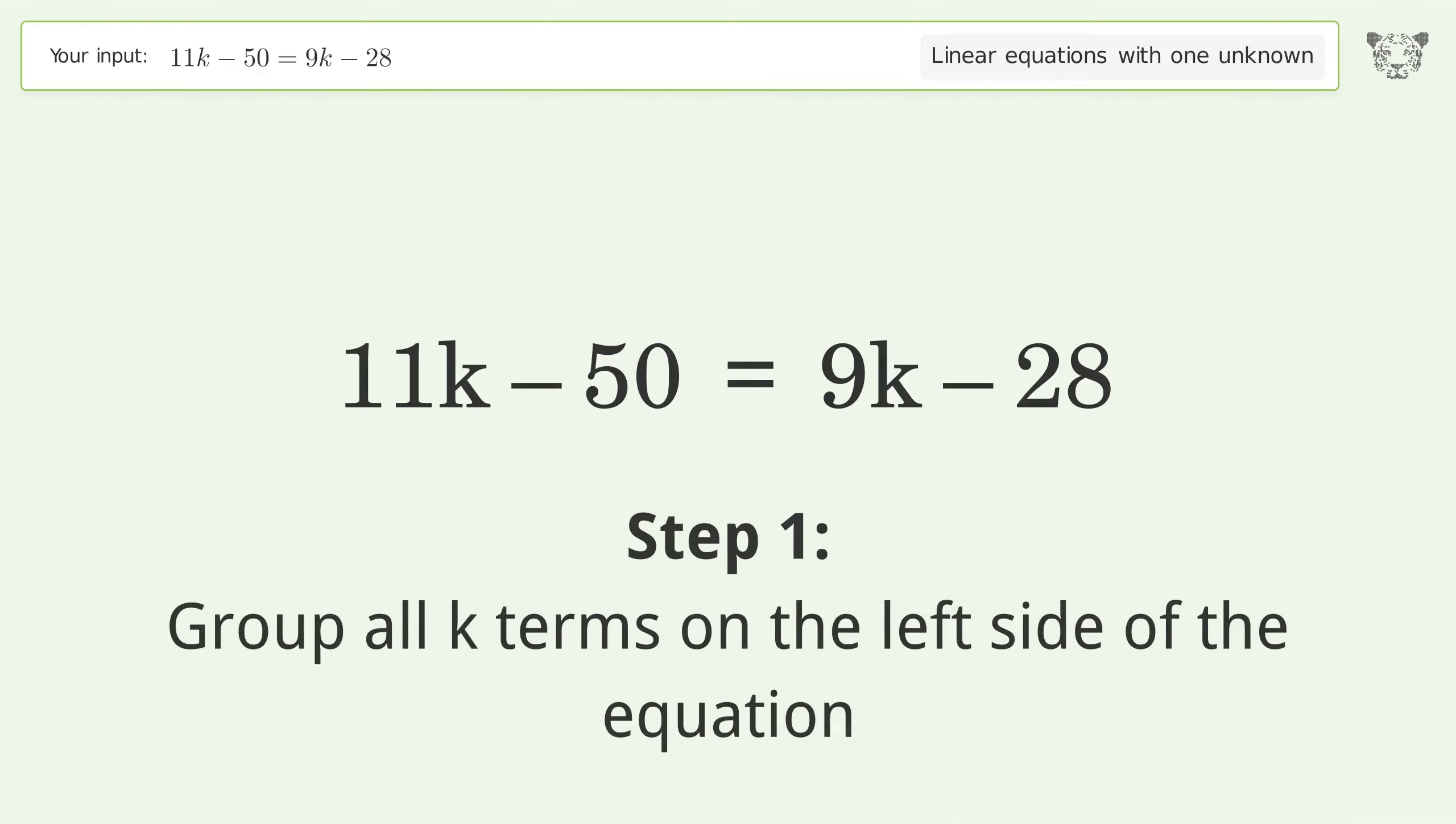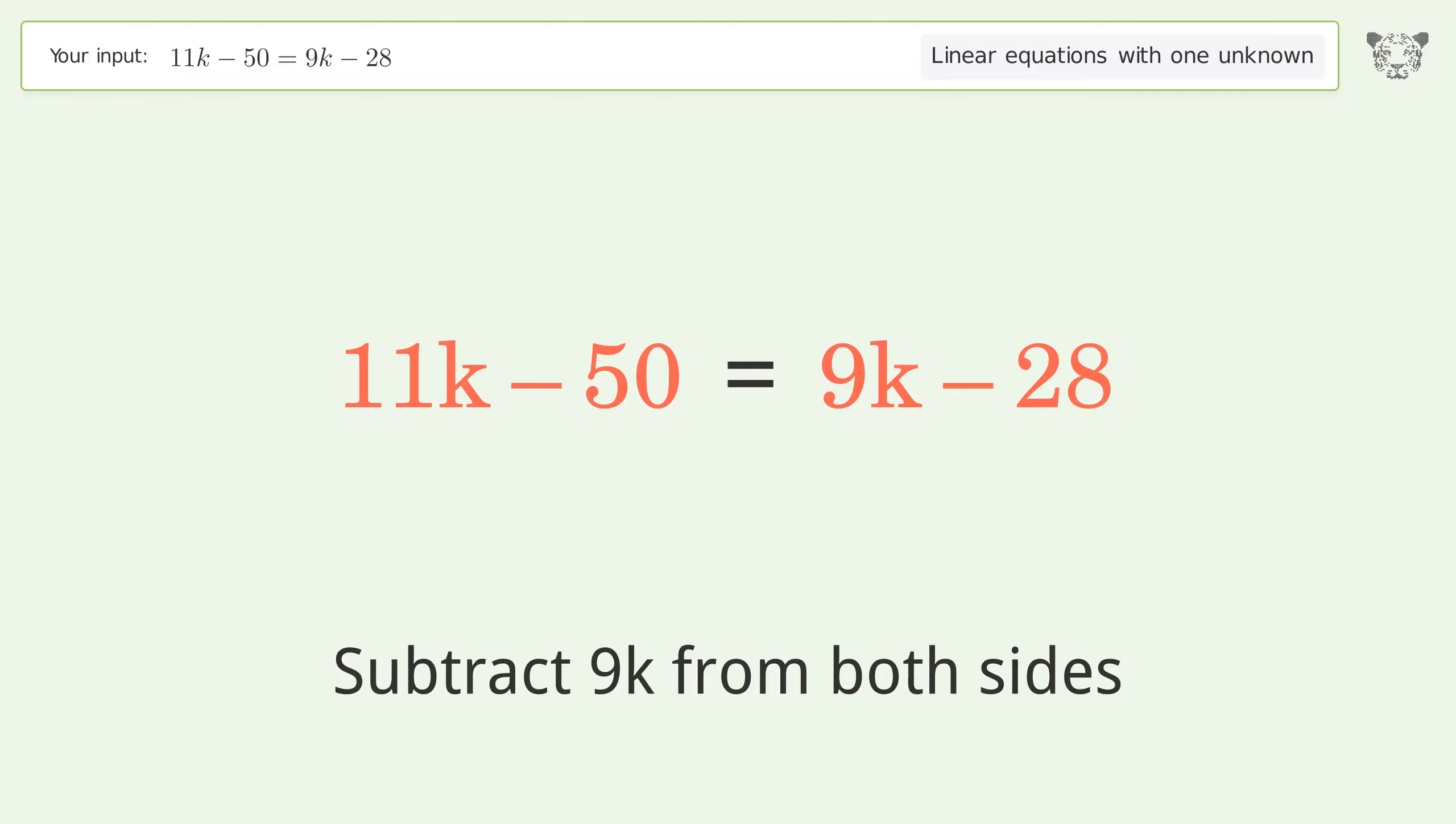Group all k terms on the left side of the equation. Subtract 9k from both sides.